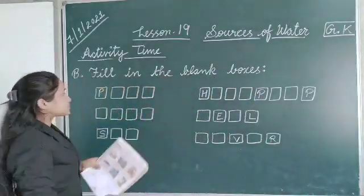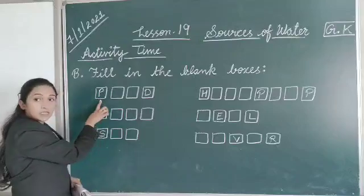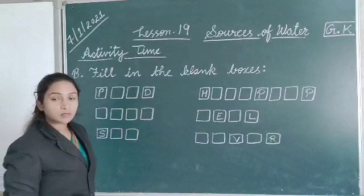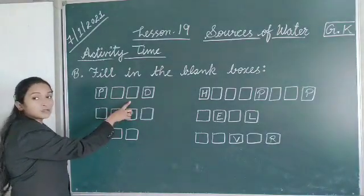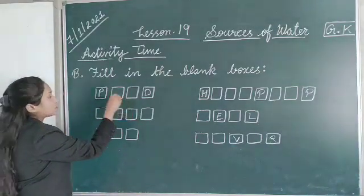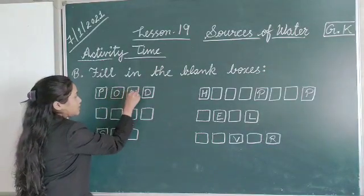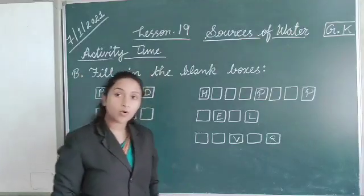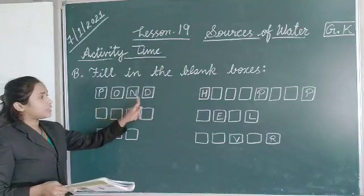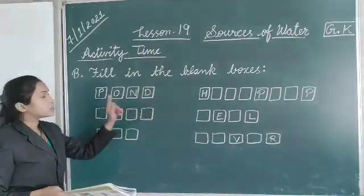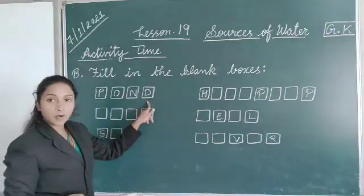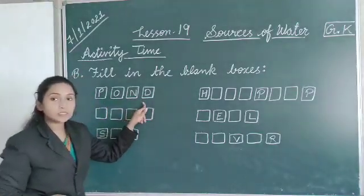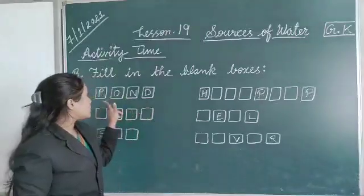So first one, here P is given, then two blank boxes, then D. What should come here? O-N. We all know, spelling of pond, P-O-N-D, pond. P-O-N-D, pond. ON makes talaab, okay?